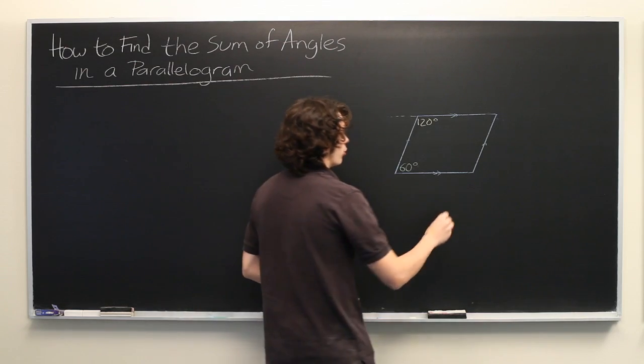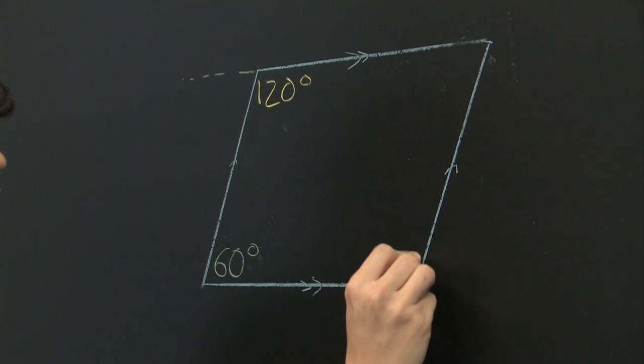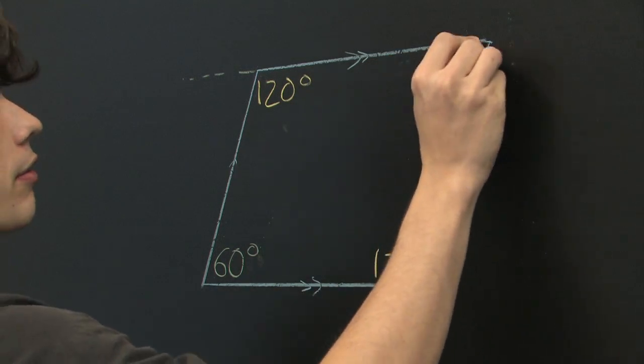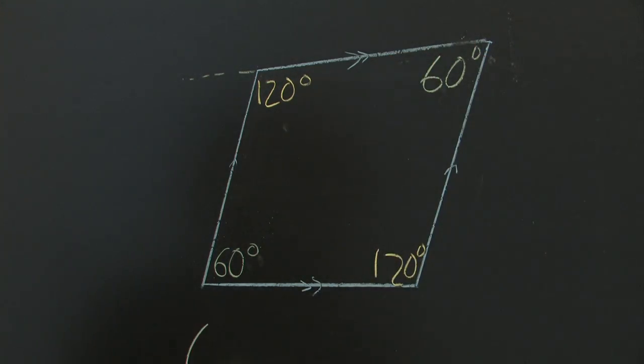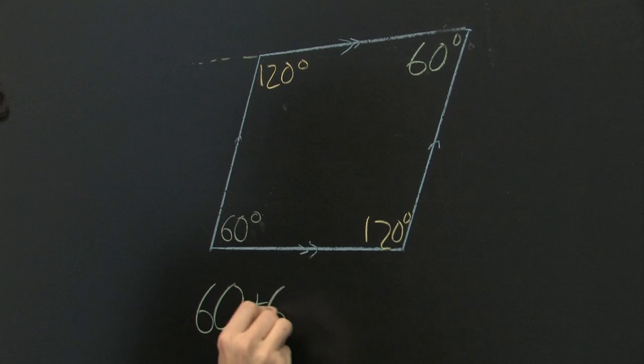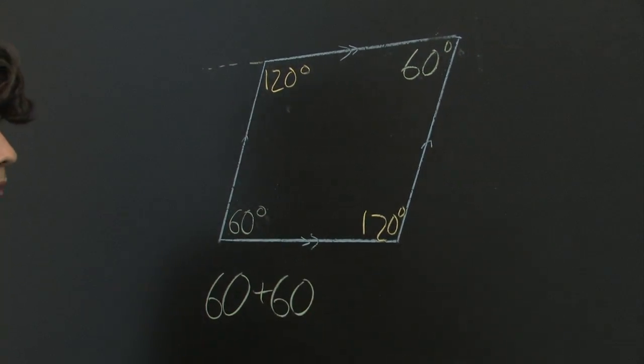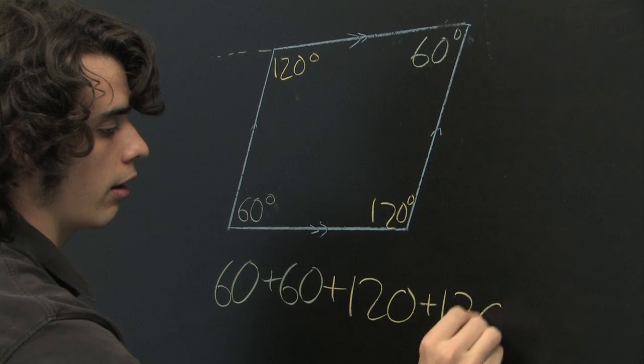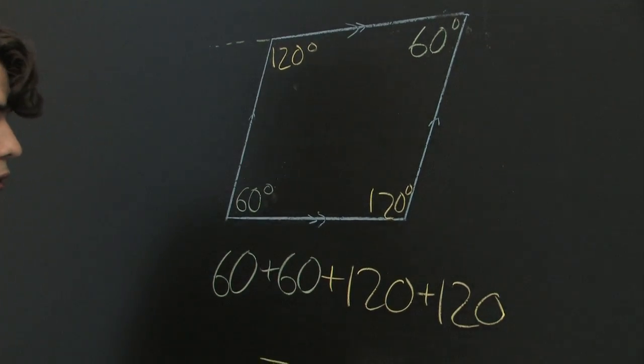From there, it's not hard to show that this one would also be 120 degrees, and this one would also be 60 degrees. You could add it all up: 60 plus 60, plus 120, plus 120, and you would get 360 degrees.